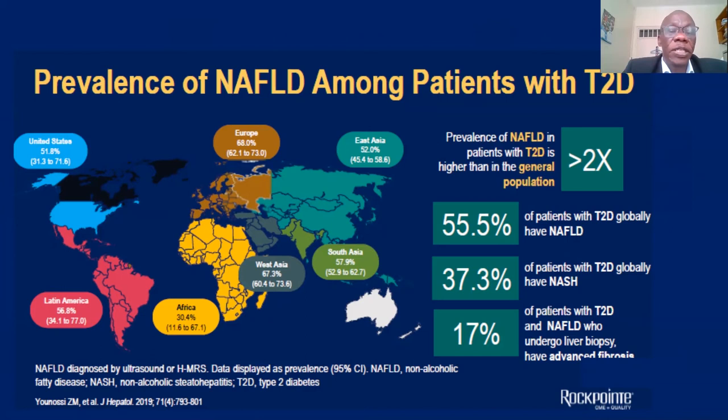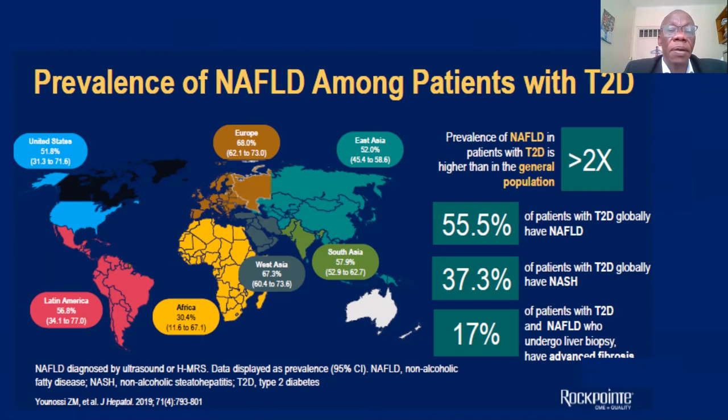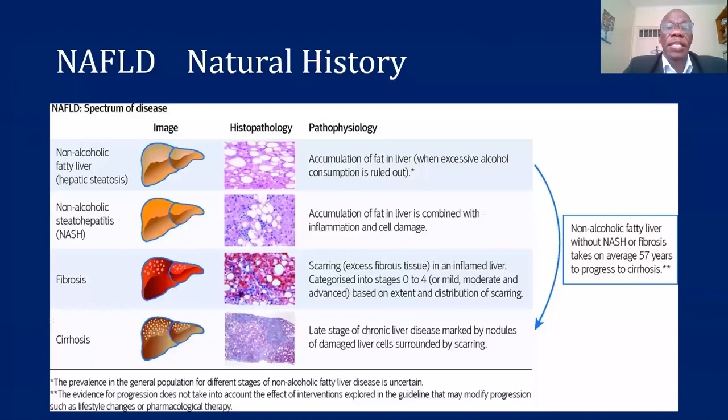This is not a small number, and it will lead to significant impacts — especially looking at the capacity and availability of equipment for detection and management of patients who will be found to have progressive liver disease arising from NAFLD itself.